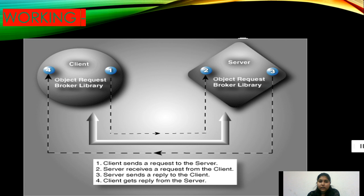Now we will see the actual working of CORBA. On one side is the client-side machine and on the other side is the server-side machine. Both machines use the Object Request Broker library. The client sends a request to the server, the server receives the request from the client, the server sends a reply to the client, and the client receives the reply from the server. This is how CORBA actually works.